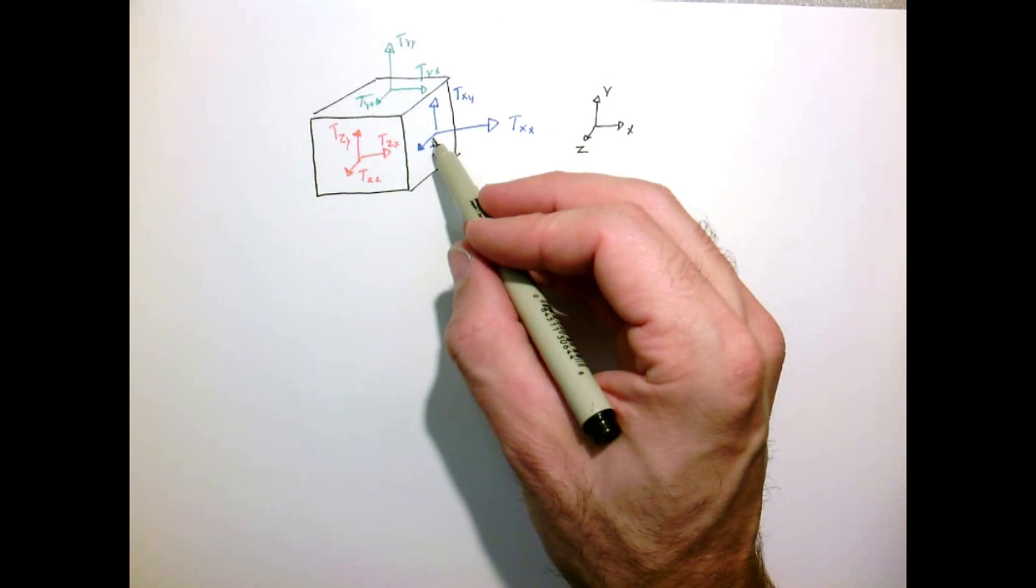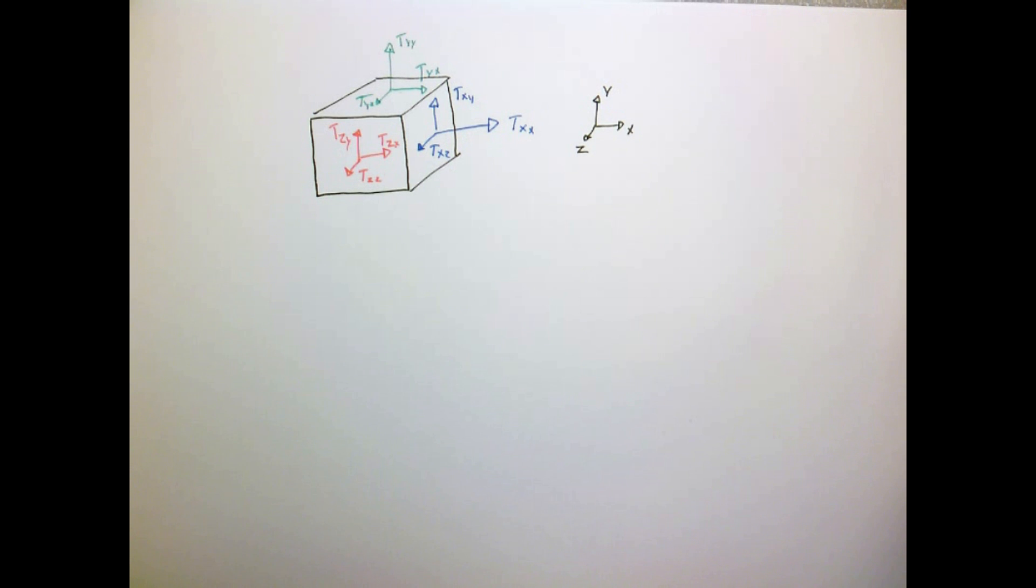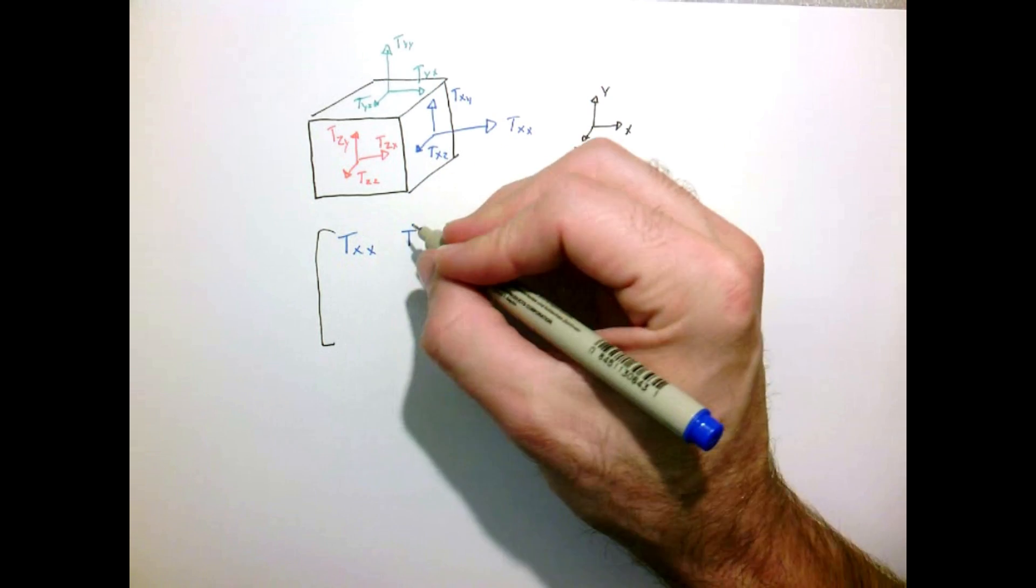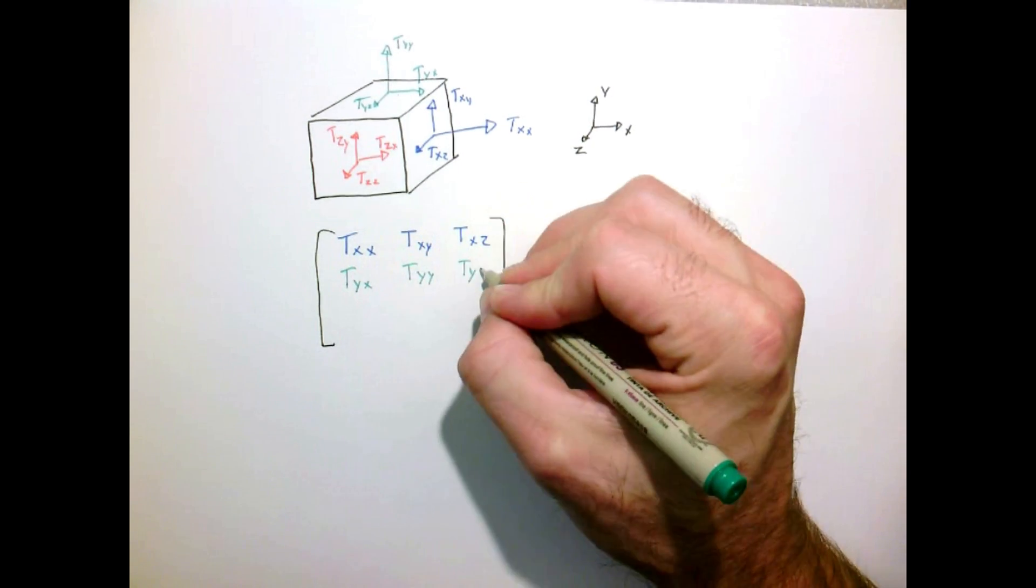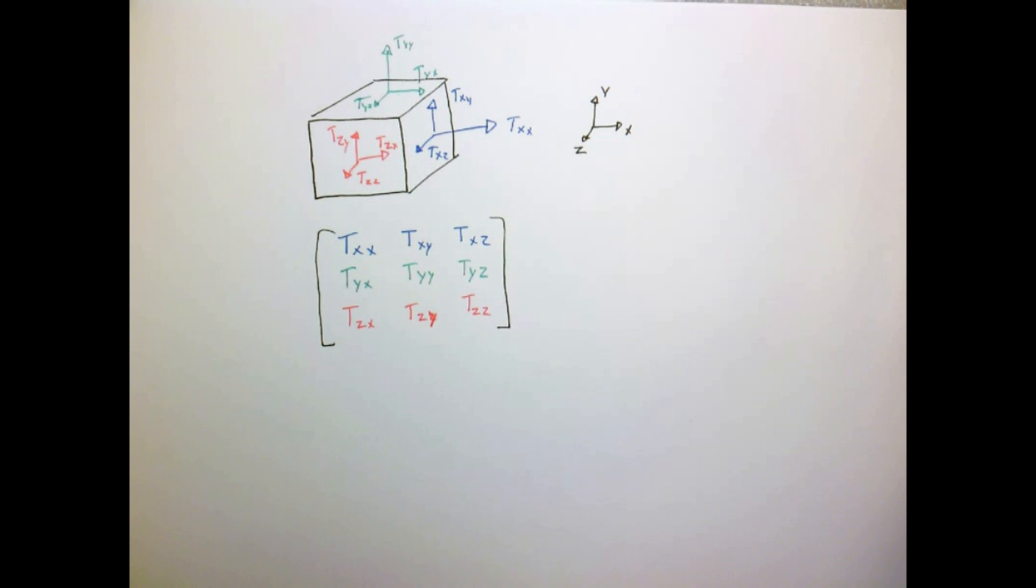So τ_xx is the x force acting on the face with the normal component in the x direction. So we represent these nine components of the stress tensor in a matrix. So we represent it as such. So it has nine components, and this is what we call the stress tensor.